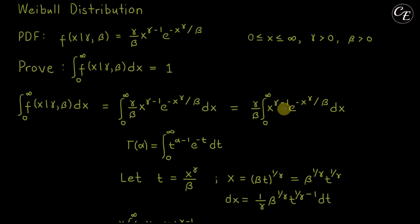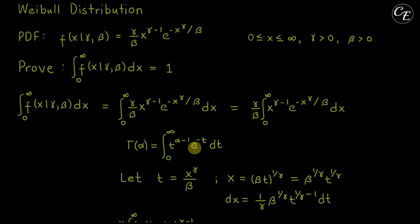In order to simplify this integral expression, we need to use the gamma function, which is defined as: Gamma of alpha equals the integral from 0 to infinity of t raised to alpha minus 1, times e raised to negative t, dt. To use this, we need to make our integral similar to this form.